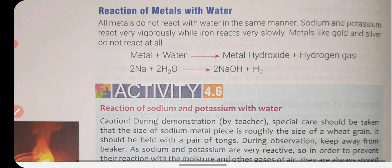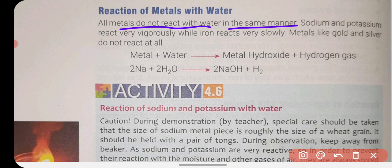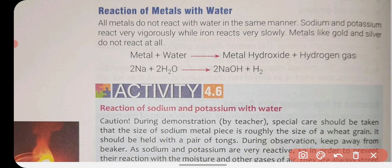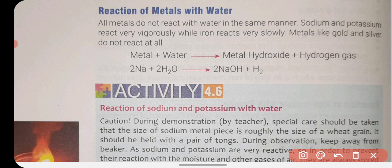Reaction of metal with water: if metal reacts with water, not all metals react in the same manner. There are differences. Sodium and potassium react very vigorously with water. Iron reacts very slowly. Gold and silver do not react with water at all. For example: two molecules of sodium react with two molecules of water to produce sodium hydroxide and hydrogen gas. When metals react with water, hydrogen gas is also released.